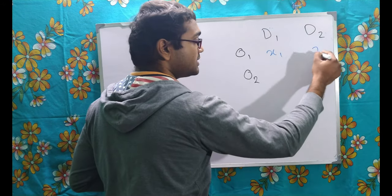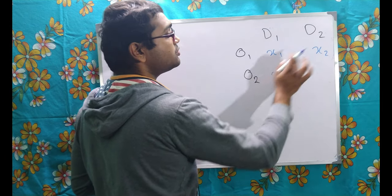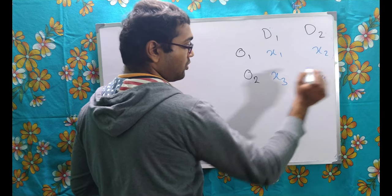Let the method cost for transportation from origin 1 to destination 1 is x1, origin 1 to destination 2 is x2, origin 2 to destination 1 is x3, origin 2 to destination 2 is x4.